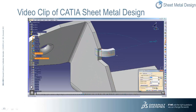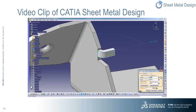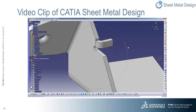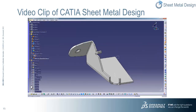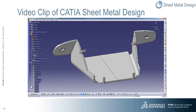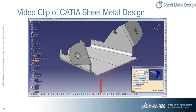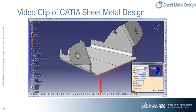Next we do a wall on edge definition using the specified parameters and we see the preview capability. Pay attention to the bend definition and the valuable capability to define the bend extremity relief for this tab. We see how easy and seamless it is to toggle between the folded and unfolded views of our sheet metal part, which is a very strong value proposition of CATIA sheet metal design. Using the mirroring capability we instantaneously define the other side of the sheet metal part, and again we view the folded and unfolded representation of the part.